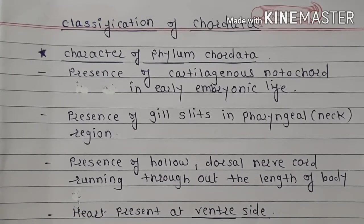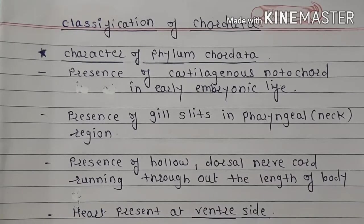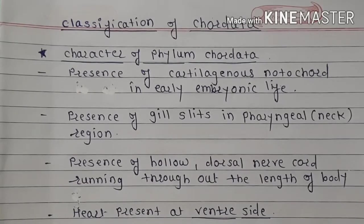The characters of Chordata: Chordata consists the notochord in early embryonic life. It consists pharyngeal gills. It consists the hollow dorsal nerve cord running throughout the length of the body. And the heart is present at the ventral side.